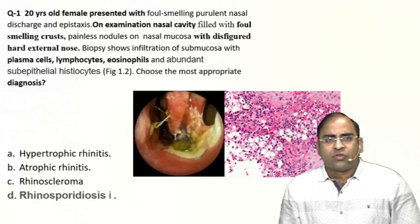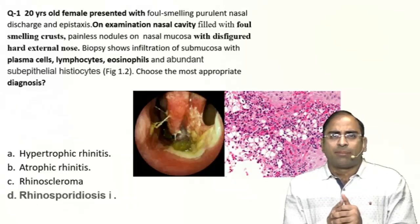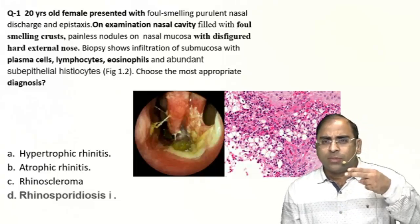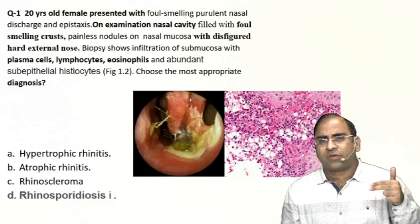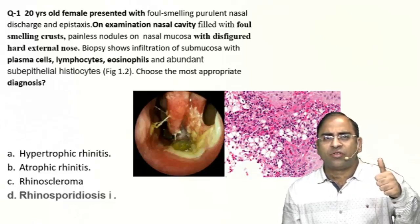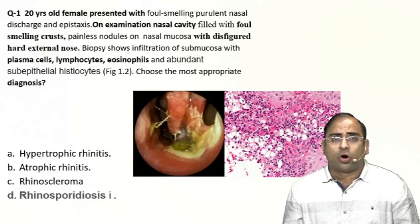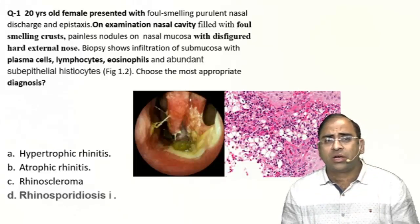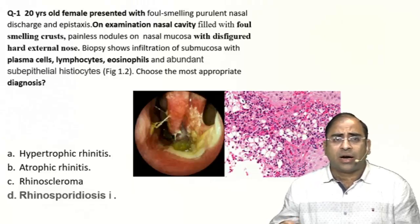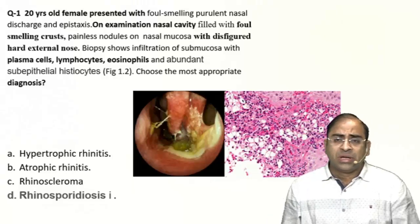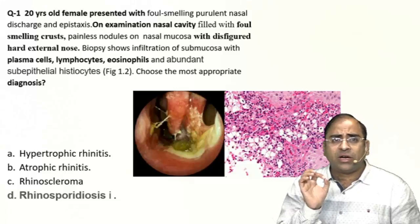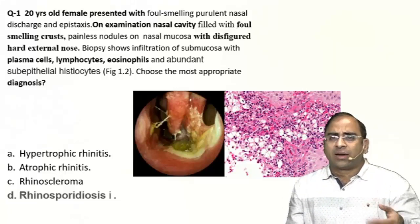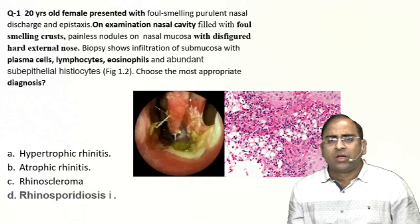One by one: a 20-year-old female complaining of foul-smelling purulent nasal discharge with epistaxis. Two important findings in the first line. On examination, the nasal cavity is full of foul-smelling crust, painless nodules are present, with a disfigured hard external nose. If I just focus on the term 'disfigured external nose,' I can make a spot diagnosis — that is rhinoscleroma.